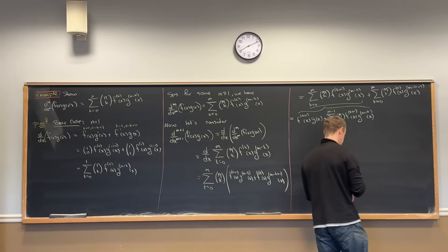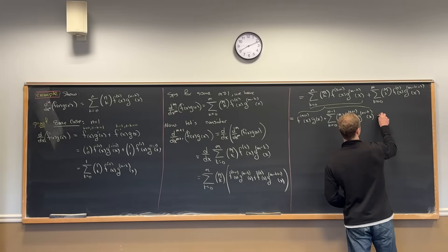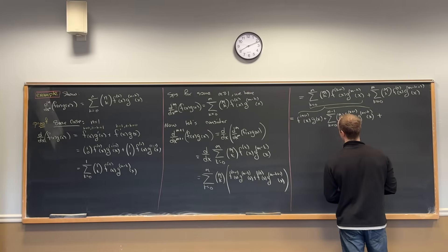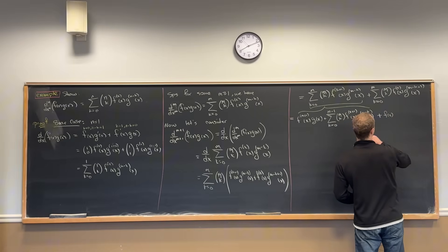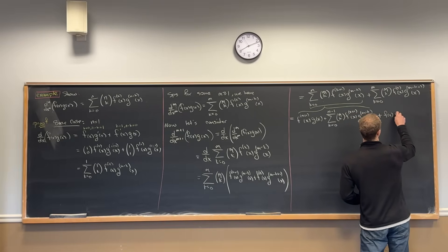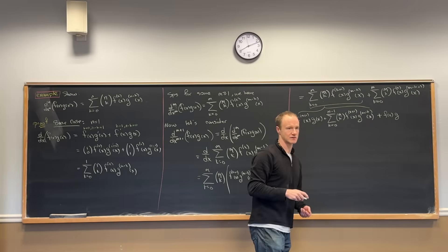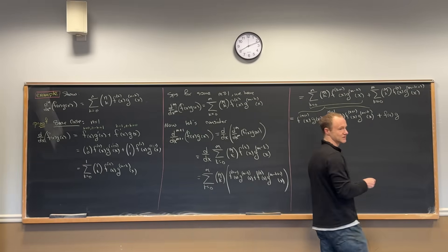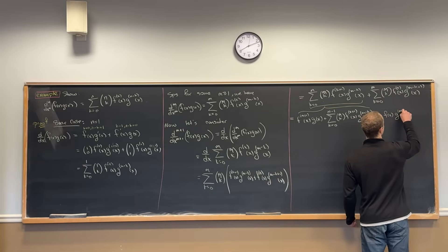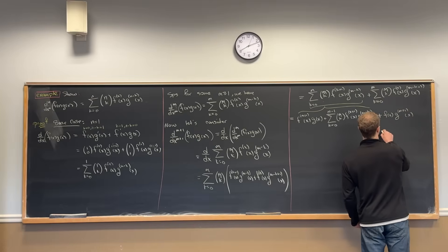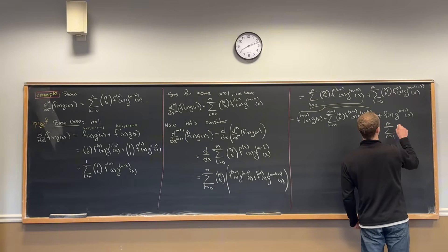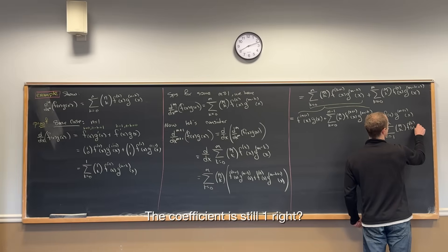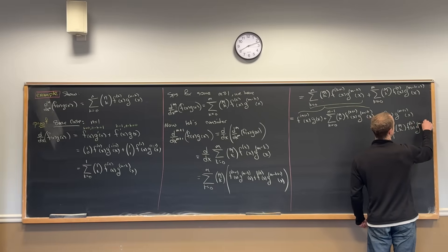Now let's do the dual thing and take the bottom term off the second sum. When k equals 0, that gives us the zeroth derivative of f and the (m+1)st derivative of g. The coefficient m choose 0 is also 1. After that we have the sum as k goes from 1 up to m of m choose k.